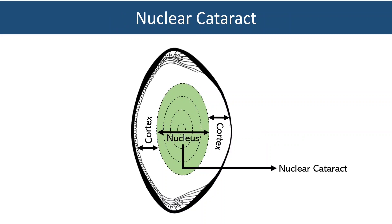Let's first start with nuclear cataract. As the name suggests, it refers to the opacity occurring in the nucleus of the lens. We know from anatomy that the nucleus is present in the center of the lens, so nuclear cataract can also be called central cataract.